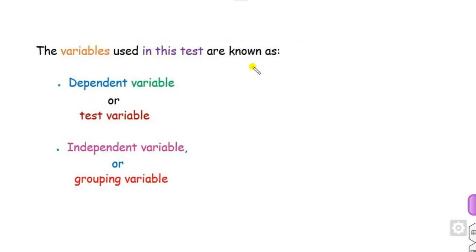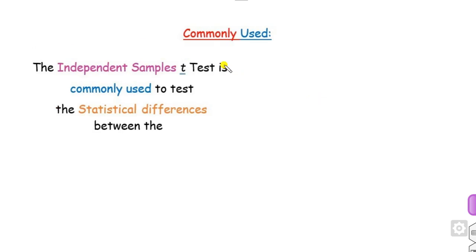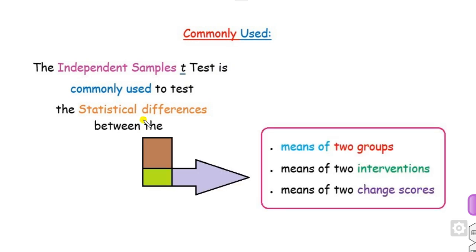Whenever we are trying to solve the independent sample T-test in SPSS, there are two variables. One is called the dependent variable, or the test variable. The second one is called the independent variable, also called the grouping variable. In SPSS, this window will appear where you specify the test variable (the dependent variable) and the grouping variable (the independent variable). This test is used to check whether there is any statistical difference between the means of two groups or between two interventions.